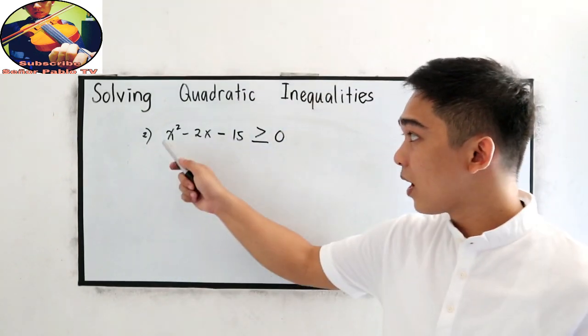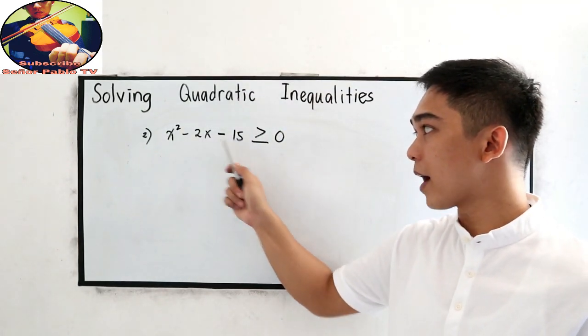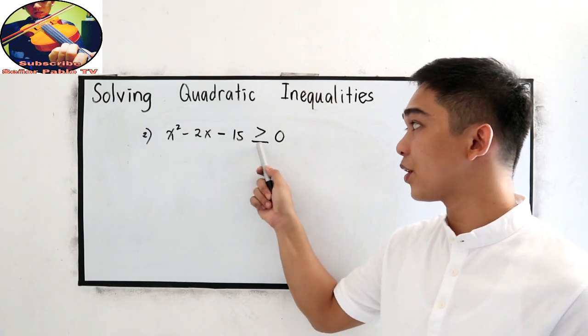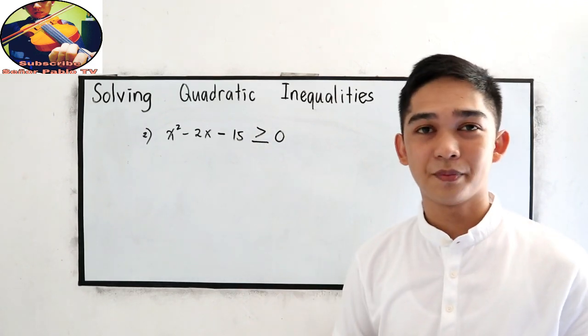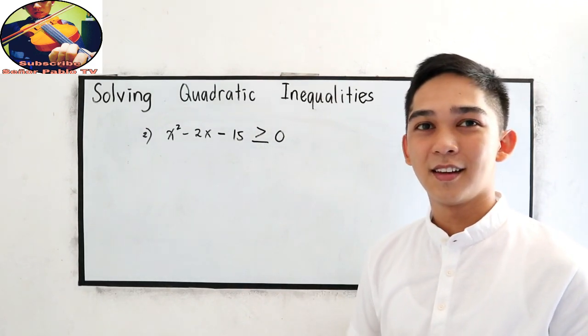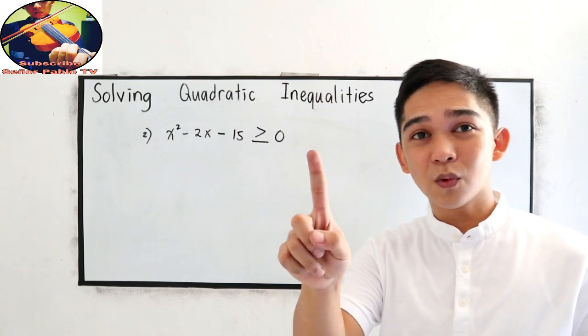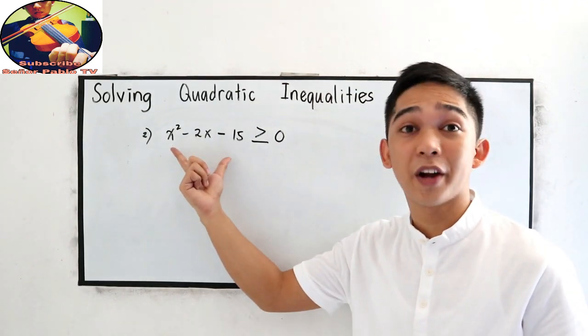Okay, our problem is x squared minus 2x minus 15 is greater than or equal to 0. Our first step, we need to factor our trinomial.